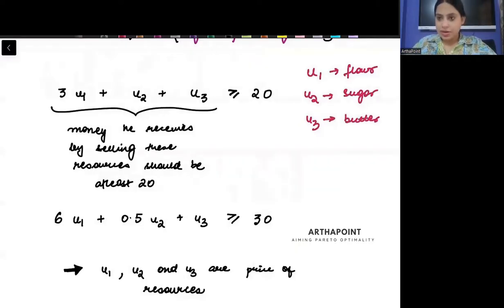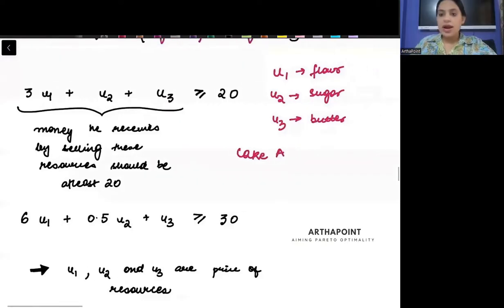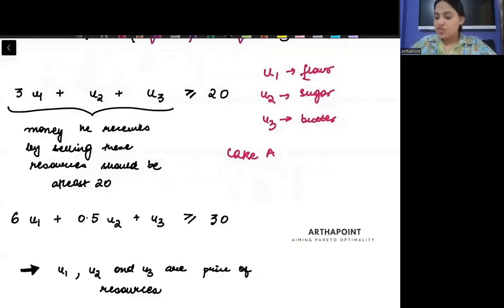Then, when I make cake A, how many flour I require? Three units of flour. And per unit, the amount is U1, so 3 × U1. How many sugar? One unit, so 1 × U2. How many butter? One unit, so 1 × U3.